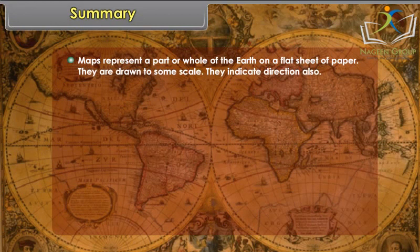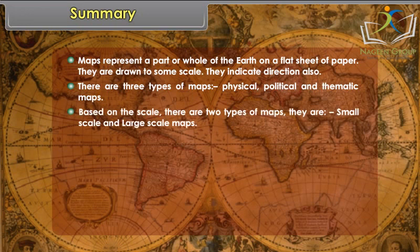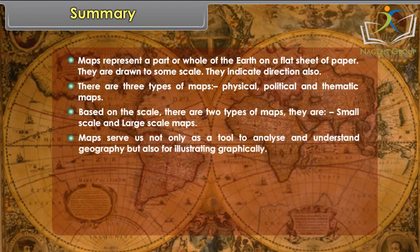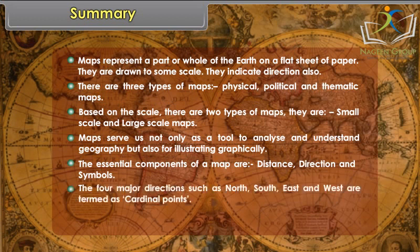Maps represent a part or whole of the earth on a flat sheet of paper. They are drawn to some scale and indicate direction. There are three types of maps: physical, political, and thematic maps. Based on scale, there are two types: small scale and large scale maps. Maps serve us as a tool to analyze and understand geography, and also for illustrating graphically. The essential components of a map are distance, direction, and symbols. The four major directions — north, south, east, and west — are termed as cardinal points.